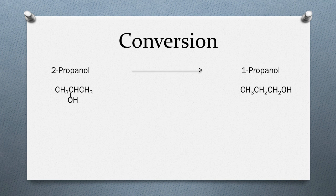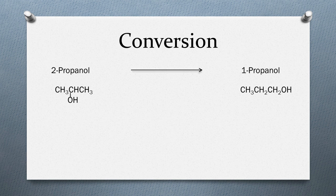A primary alcohol can be prepared from an alkyl halide using a nucleophilic substitution reaction. So if you want 1-propanol, if you can prepare 1-bromopropane or 1-chloropropane, you can easily convert that to 1-propanol. We know that we can prepare a haloalkane or 1-bromopropane from an alkene, and obviously the secondary alcohol can be converted to an alkene.